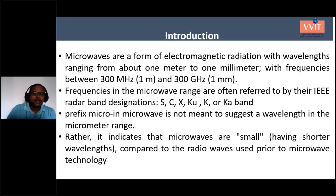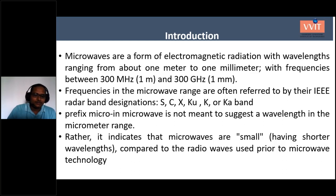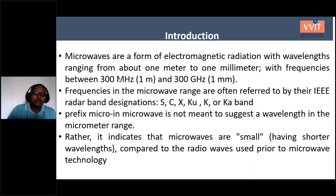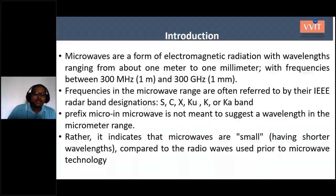Microwaves have very small wavelength — the 'micro' refers to wavelength. Sometimes the microwave range is defined from one gigahertz to 300 gigahertz also. Different literature may define it as 300 megahertz to 300 gigahertz, or one gigahertz to 300 gigahertz. These microwave frequencies are categorized into different band designations according to IEEE as S, C, X, KU, K, and KA bands.